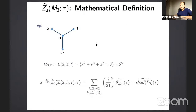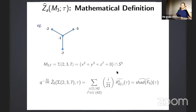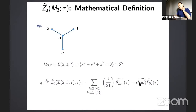A nice example is a specific plumbing graph whose corresponding three-manifold is the Brieskorn sphere — the intersection of S^5 with a surface in C^3. Plugging the numbers into the definition, Z-hat turns out to be a false theta function. Moreover, it's the Eichler integral of the shadow of Ramanujan's mock theta function — just one beautiful example.